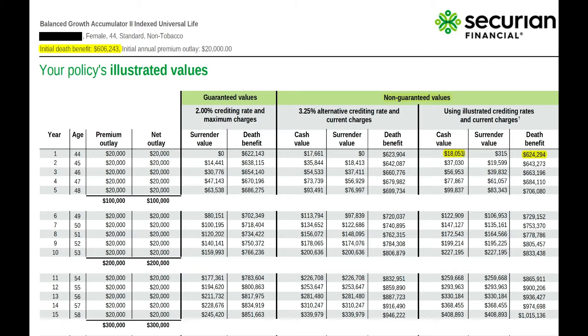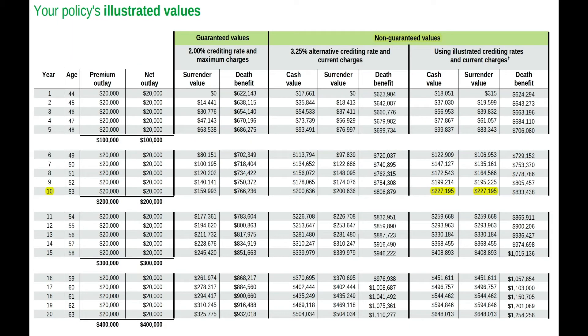In some illustrations, the number is exact, and in others it is not. In year 10, the cash value and the surrender value are the same because there are no more surrender charges if you were to terminate your policy. They will stay the same for the duration of your policy until you take out a loan or begin taking your tax-free retirement income. Then you will see your cash value, surrender value, and death benefit change due to the policy loans and loan interest.